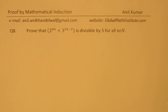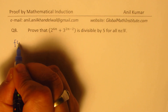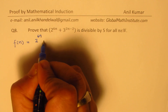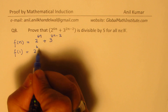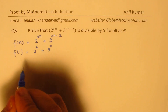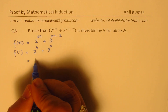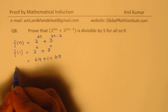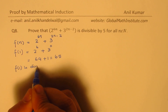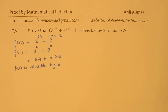Now let's move on to the last question, question number 8. We need to prove that 2 to the power of 6n plus 3 to the power of 2n minus 2 is divisible by 5 for all values of n. You can pause the video and attempt this. We define f(n) as 2 to the power of 6n plus 3 to the power of 2n minus 2. For f(1), we get 2 to the power of 6 plus 3 to the power of 0, which is 64 plus 1, which is 65. So clearly it is divisible by 5, and f(1) is divisible by 5.